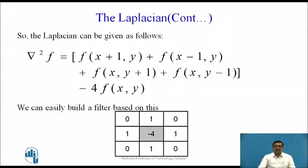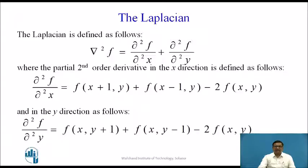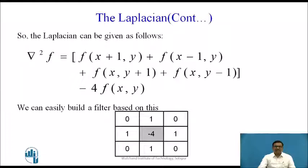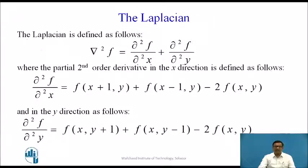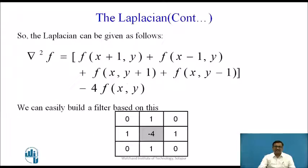Adding both equations together, the Laplacian ∇²f = f(x+1, y) + f(x−1, y) + f(x, y+1) + f(x, y−1) − 4·f(x,y). Adding the second derivatives in x and y gives 4 times f(x,y). Based on this equation we can prepare the Laplacian filter as a 3×3 matrix.